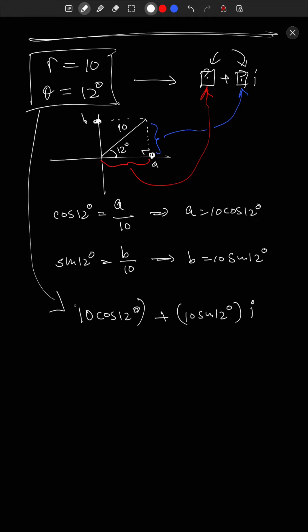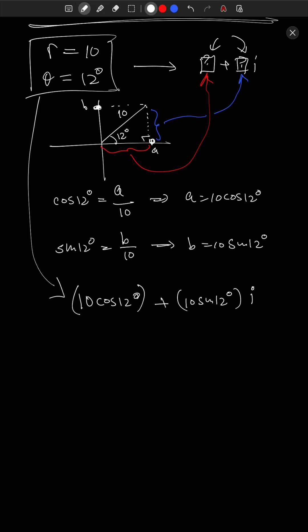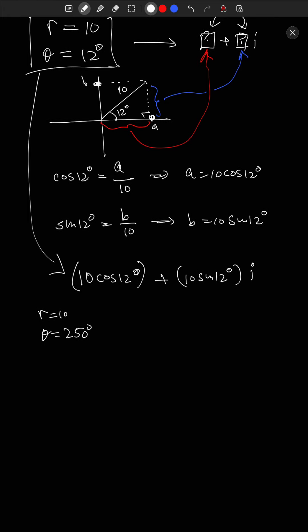Moving in this direction — from r and θ to standard form — is fairly straightforward. This also works for any angle; for example, if r = 10 and θ = 250 degrees, you get 10 cos(250°) + 10 sin(250°) · i, because we defined sines and cosines as x and y coordinates on a unit circle, so you don't necessarily have to draw a triangle.